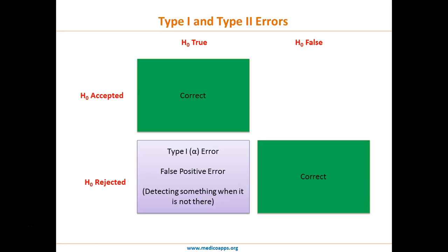Think of something like a pregnancy urine test that comes back positive but the person is not actually pregnant. That kind of error — detecting a pregnancy when the patient is not pregnant — is Type 1 or alpha error, the false positive error. You have to remember this; lots of questions are asked on this. When the null hypothesis is true and you reject it, meaning you detect something which is not there, it is Type 1 error — false positive.